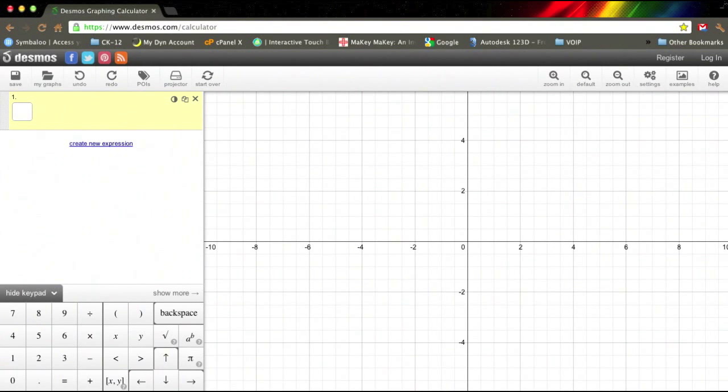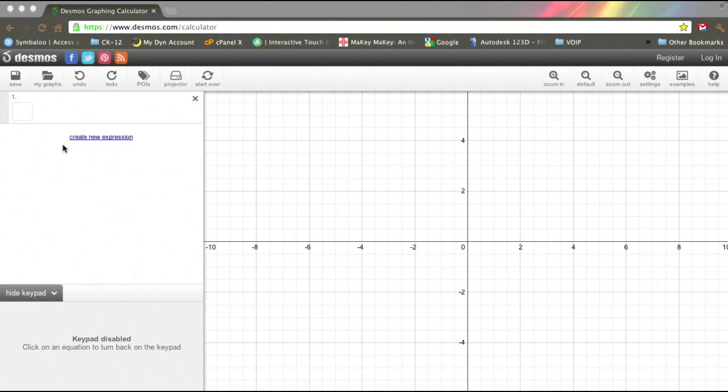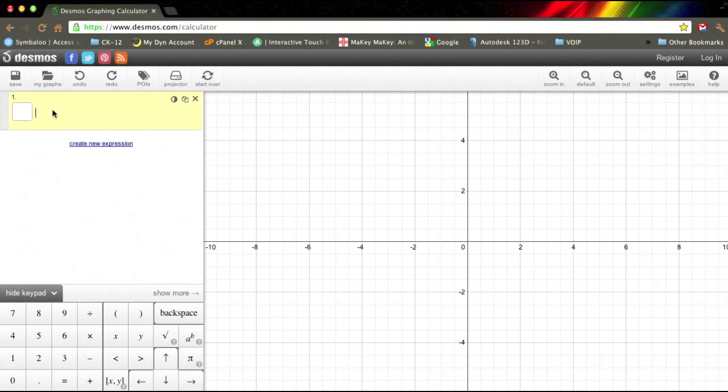If you're taking a look at specifically the expressions you wanted entered, your first one was y equals 2 to the power of x, so we do y equals 2, and then we do that shift 6 x, and there it graphs that graph for you immediately.